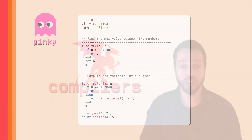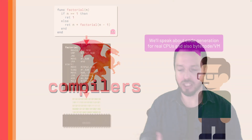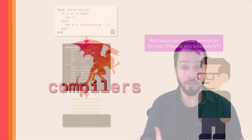By code generation, I mean creating instructions — spitting out instructions for if statements, while loops, for statements, assignments — all the different statements of a programming language. We're going to cover all of that.